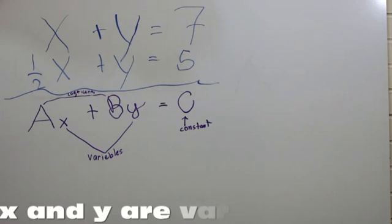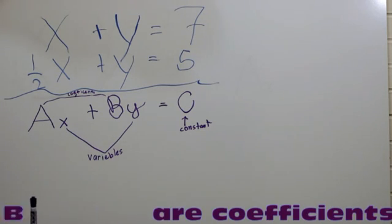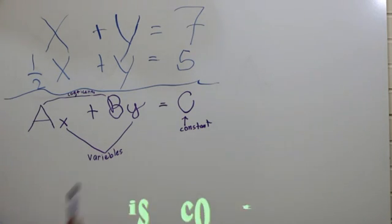x and y are the variables. a and b are the coefficients. c is a constant.